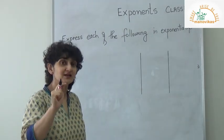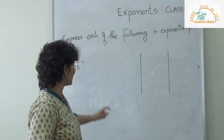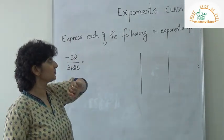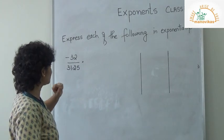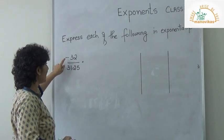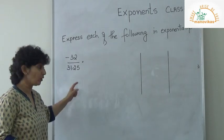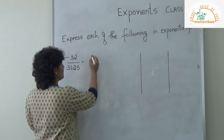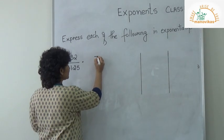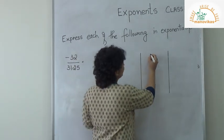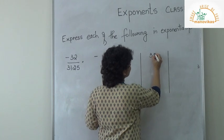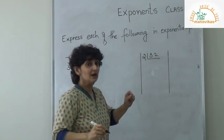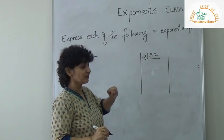So this is my answer. Let me do one more example with the same type of question: express each of the following in exponential form. I have minus 32 upon 3125.